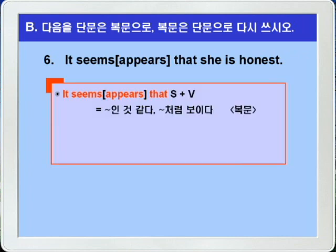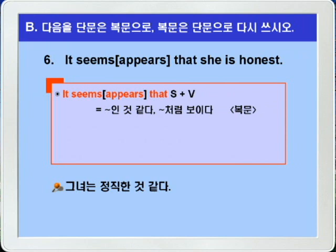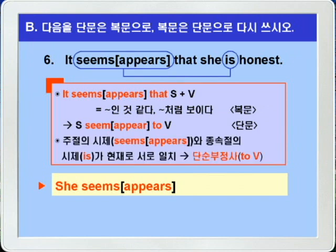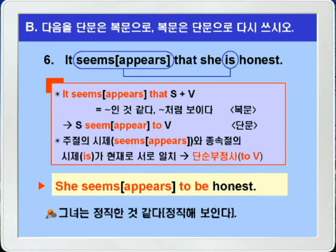6번. 'It seems/appears that she is honest.' 그녀는 정직한 것 같다. 'It seems/appears that 주어+동사'는 '주어 seem/appear to 부정사'로 바꿔 쓸 수 있습니다. 주절의 시제 seems와 종속절의 시제 is가 모두 현재로 같으니까, 단순부정사 'to be'를 쓰면 됩니다. 정답: 'She seems/appears to be honest.' 그녀는 정직한 것 같다 혹은 정직해 보인다.